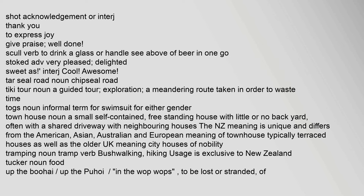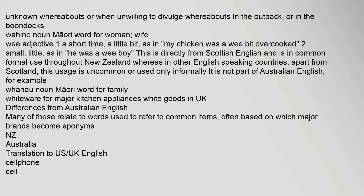Other New Zealandisms include: 'tucker' for food; 'up the boahai'/'up the puhoi'/'in the wop wops' meaning lost or stranded of unknown whereabouts; 'wahine' (Māori for woman/wife); 'wee' meaning small or a little bit (directly from Scottish English, in common formal use throughout New Zealand); 'whānau' (Māori for family); and 'whiteware' for major kitchen appliances. Many differences from Australian English relate to words for common items, often based on which major brands became eponyms — for example, NZ uses 'cell phone' while Australia uses 'mobile', NZ uses 'dairy' for a convenience store while Australia uses 'deli', and NZ uses 'duvet' while Australia uses 'duna'.